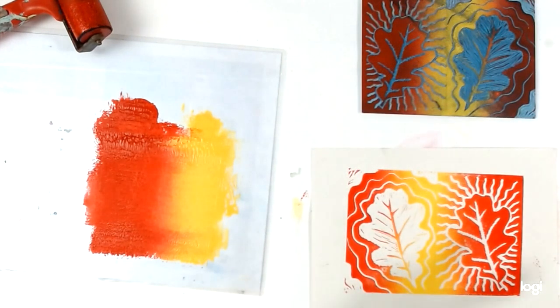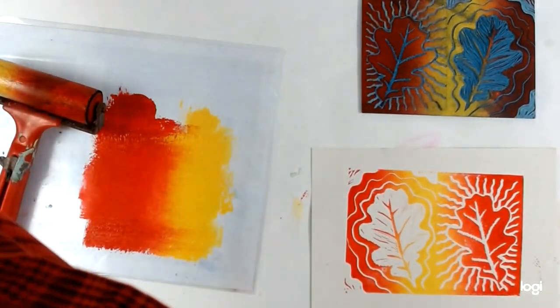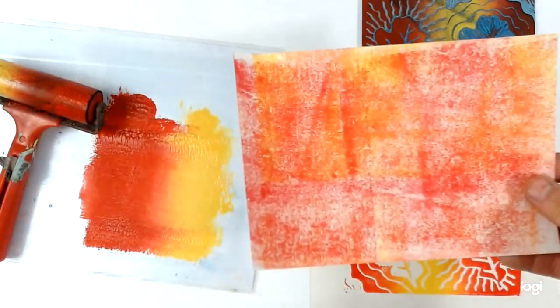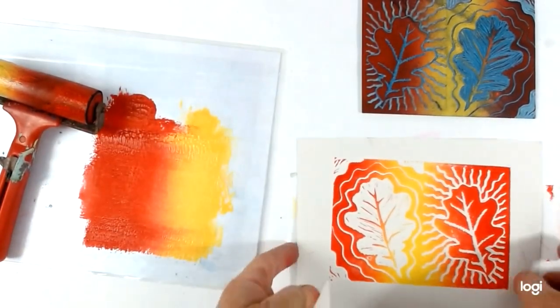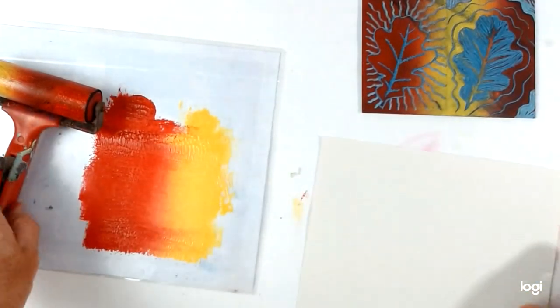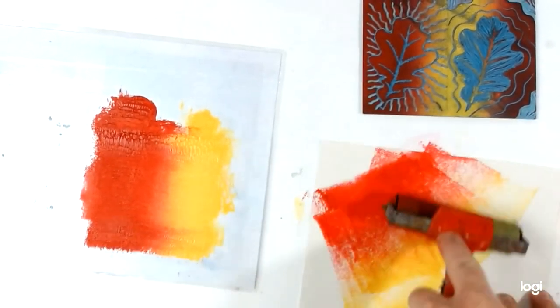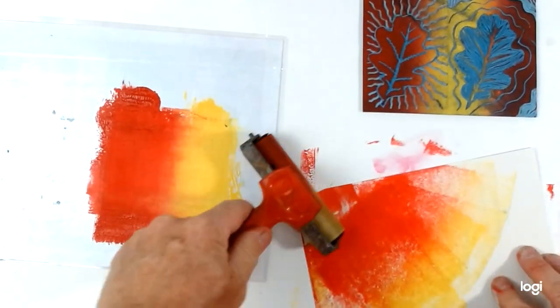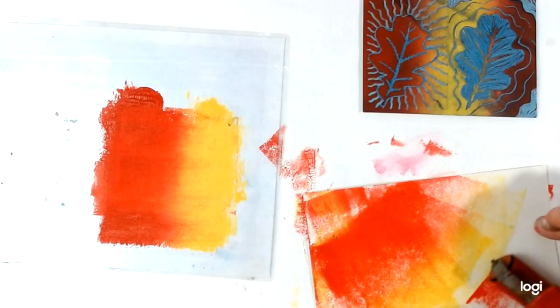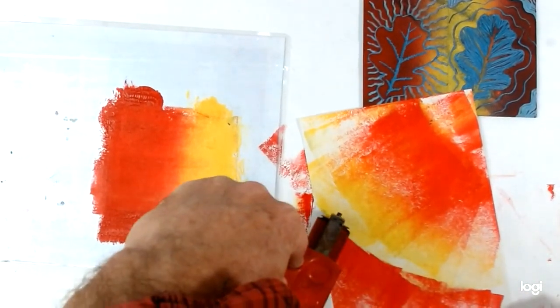Now I could print several of these. The whole point of a print is that you can do multiples. As you can see, I've got quite a bit of ink left over. Don't waste it. What you can do is roll it out onto other sheets to make interesting backgrounds. So I'm just going to do a couple like that, and just use that ink up. Some more interesting backgrounds for later work.